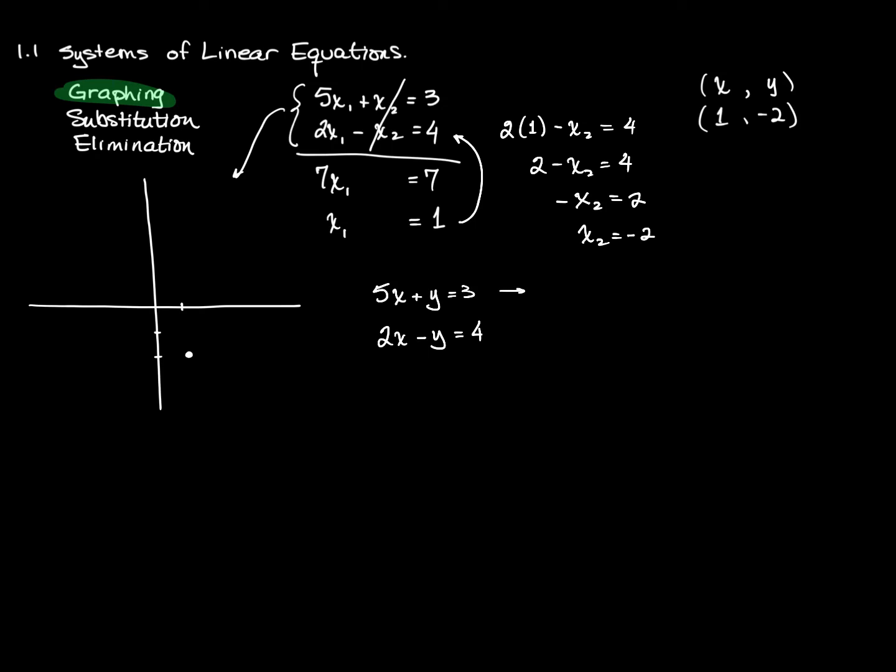So let's subtract 5x from both sides of this one. I'm going to get y equals negative 5x plus 3. And with this one here, I'm going to get negative y equals negative 2x plus 4, which of course I can rewrite as y equals 2x minus 4.